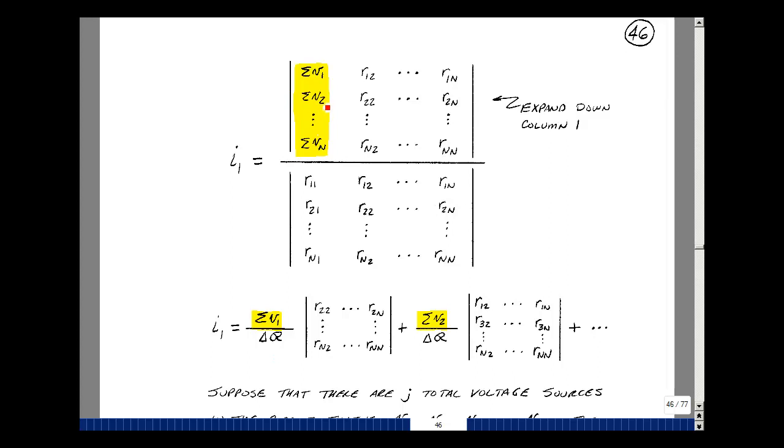Go to row two, column one, and multiply this times the determinant with this row. And actually, this column deleted, so what's left over would be this. Again, we'd be dividing that by the determinant of the mesh equations. I'm going to repeat that as we go down the column.